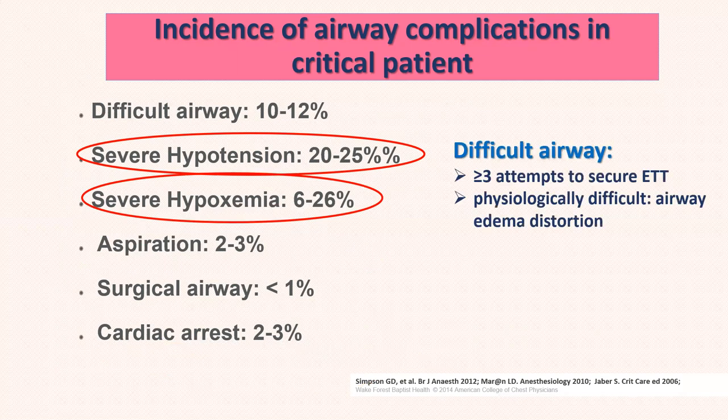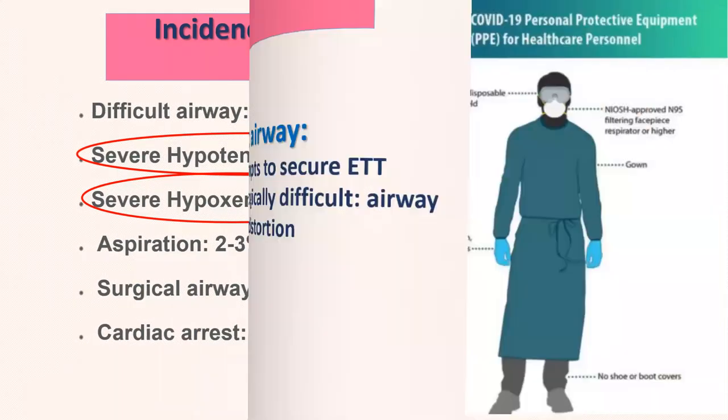By definition, a difficult airway is defined as when you need to do three or more attempts to achieve intubation. This is what's called the physiologically difficult airway, and especially in critical patients when there is airway edema and distortion, it adds more challenge and difficulty.